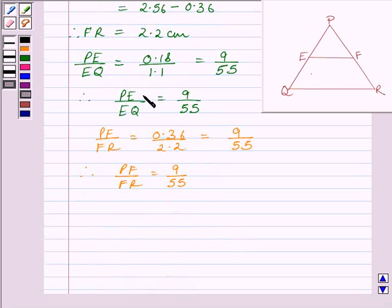Clearly, we can see PE upon EQ is equal to PF upon FR. Since both the ratios are equal to 9 upon 55, we can write PE upon EQ is equal to PF upon FR.